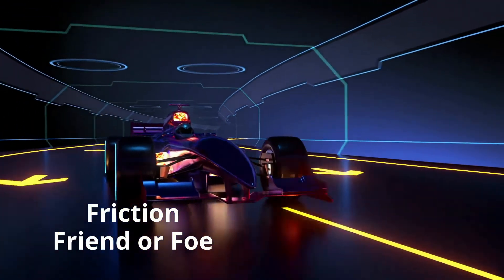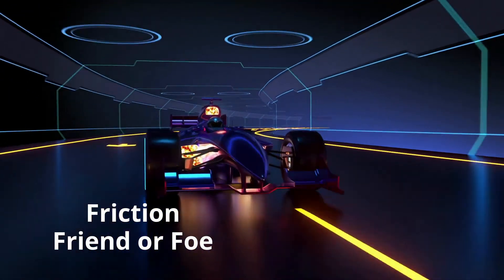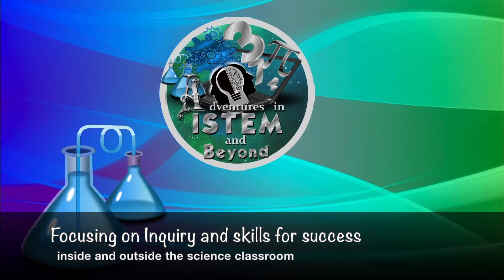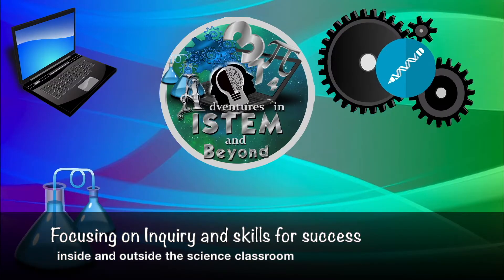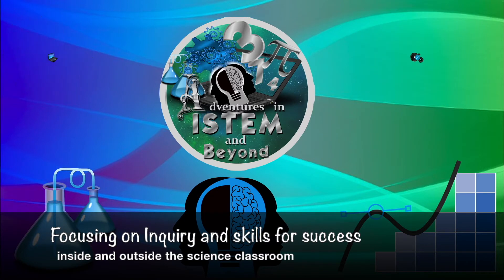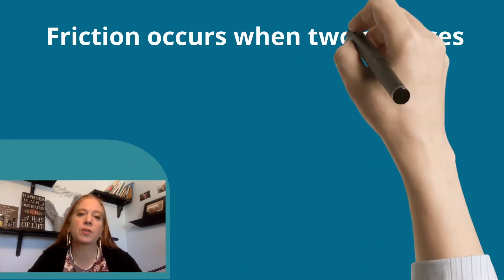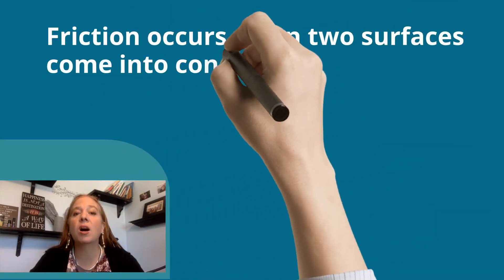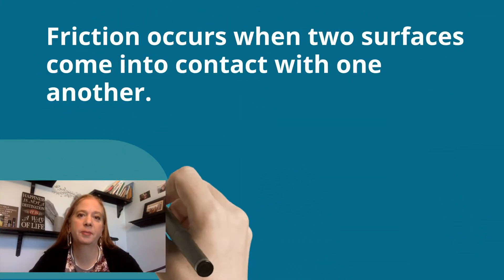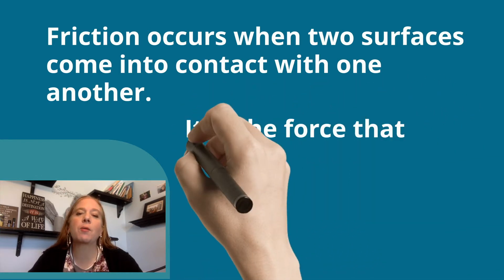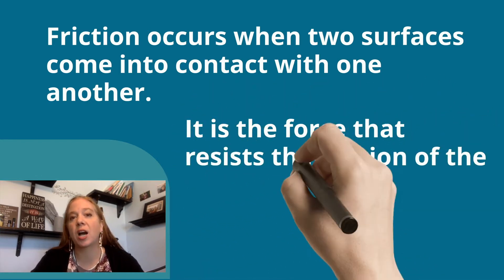Friend or foe? Friction occurs when two surfaces come into contact with one another. It is the force that resists the motion of the object.